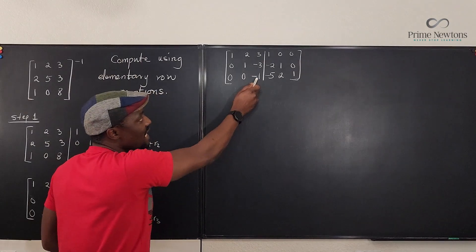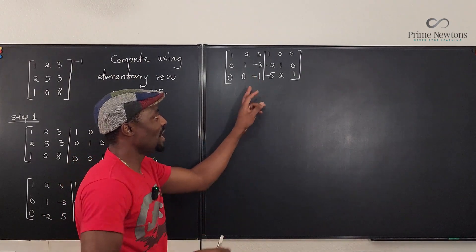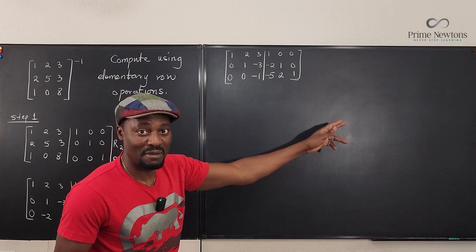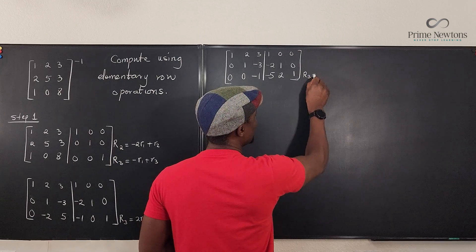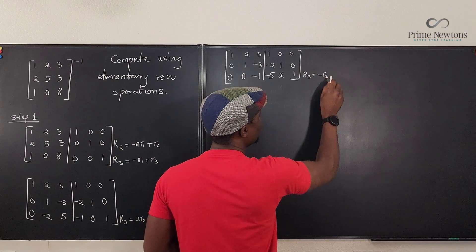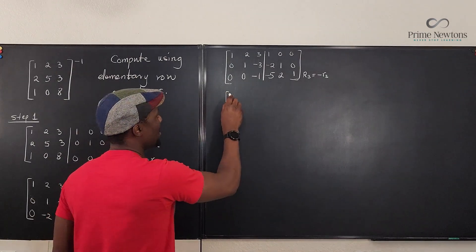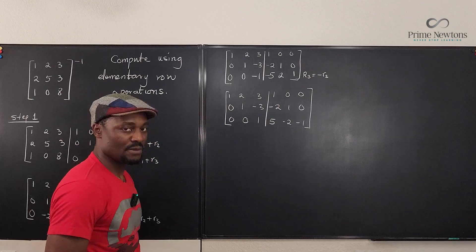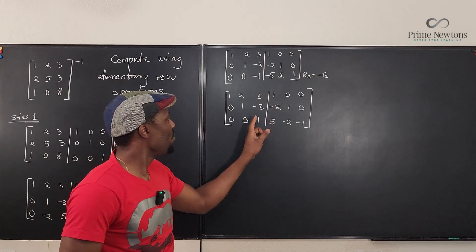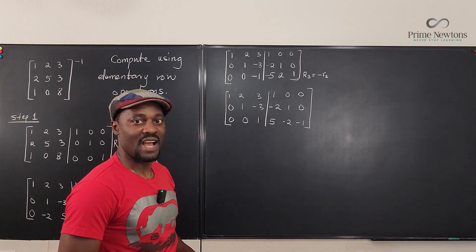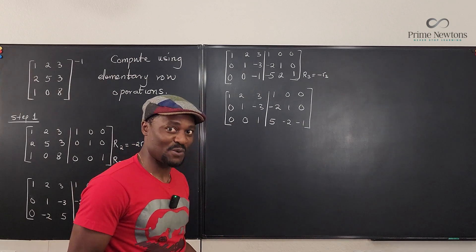After multiplying R3 by -1, we have a one in the third pivot. Now we want to get rid of the entries above the pivots in rows one and two. We want to eliminate these entries, but you shouldn't do it all together — that's the mistake I always make. Be smart about it.